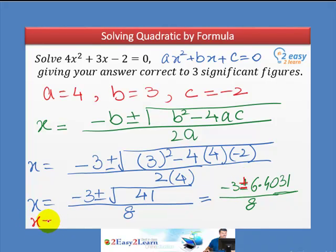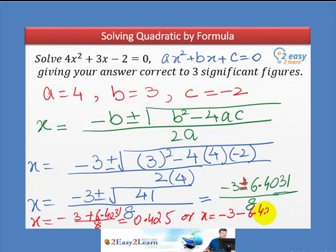So first: x = (-3 + 6.4031) / 8, and your answer is 0.425 correct to three significant figures. And the second answer is x = (-3 - 6.4031) / 8, and your final answer is -1.18 correct to three significant figures.